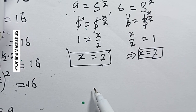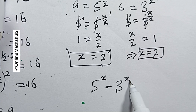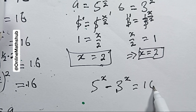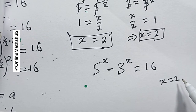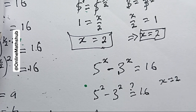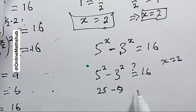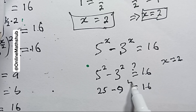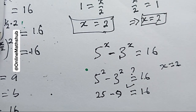Let's verify: does x = 2 satisfy 5^x − 3^x = 16? Substituting: 5² − 3² = 25 − 9 = 16. Yes, that checks out.